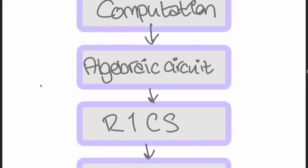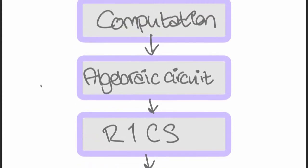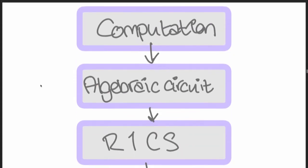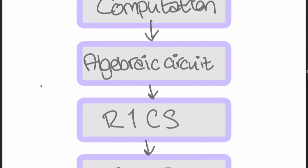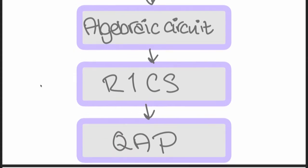Here's our prover and verifier again. Here are the first four things in the diagram — the alternative title of this talk was 'how I learned to stop worrying and love this diagram.' This is the diagram that Vitalik uses and ZK-SNARK people use. The first four blocks are: computation, algebraic circuit, R1CS (rank one constraint system), and QAP (quadratic arithmetic program). The next four things we're going to talk about are these four things.